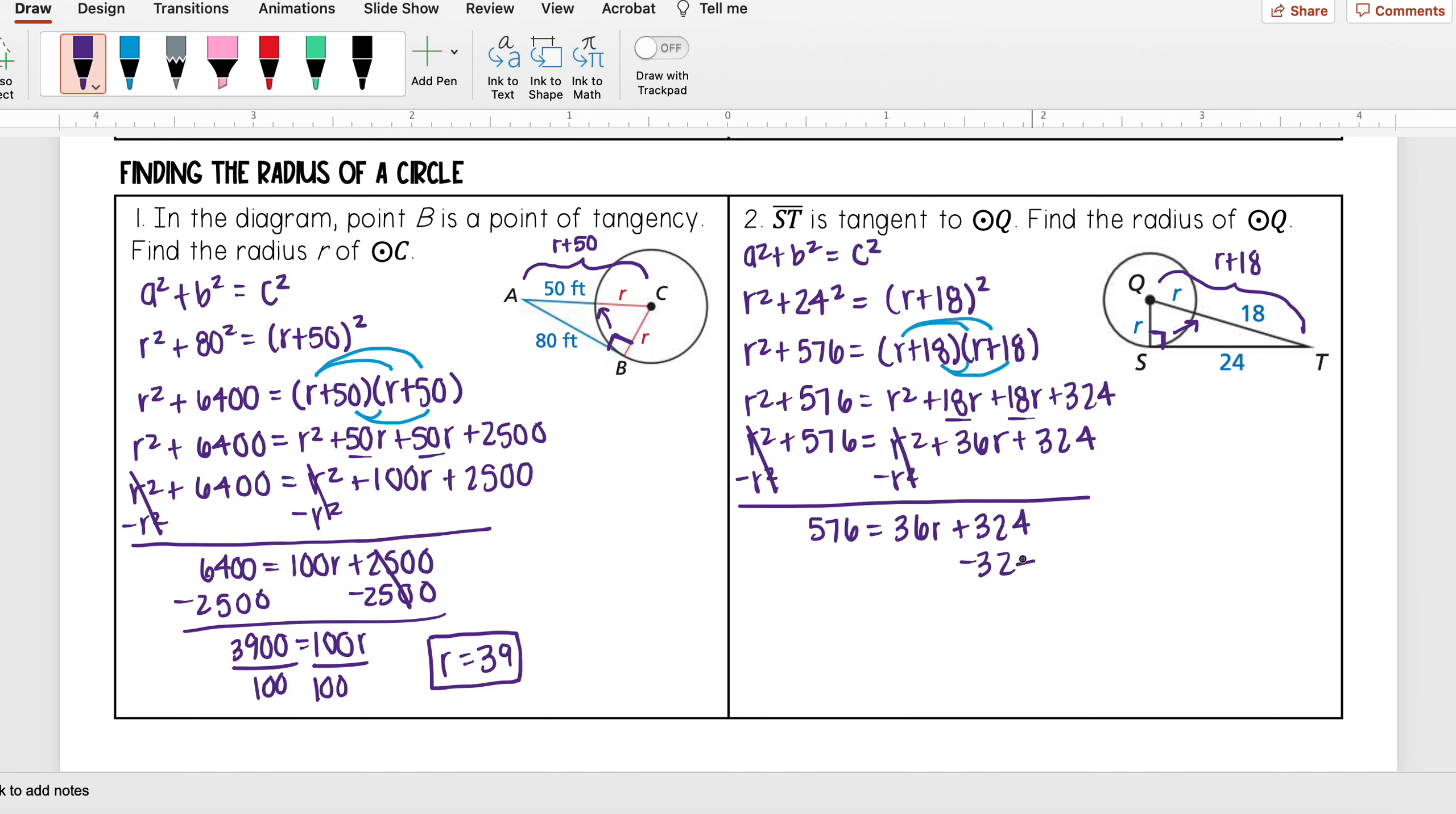And I get 252 = 36R, and then when I divide both sides by 36, I get R = 7.